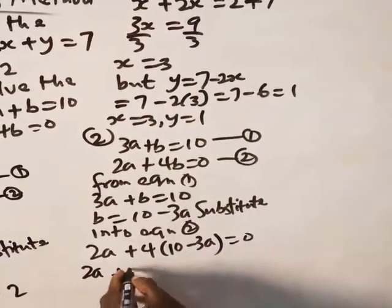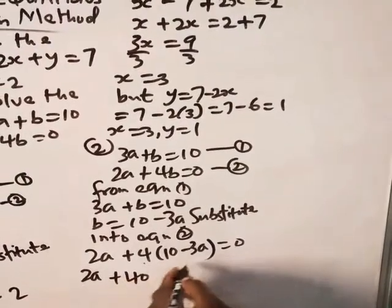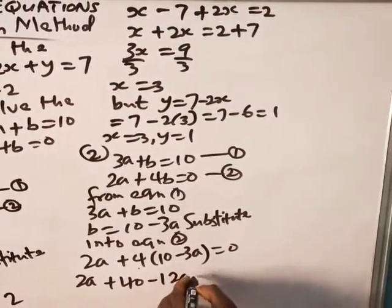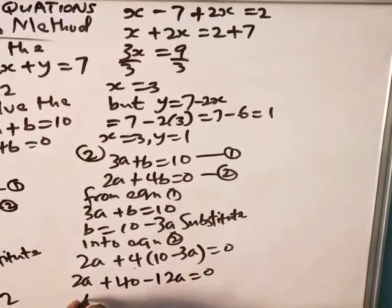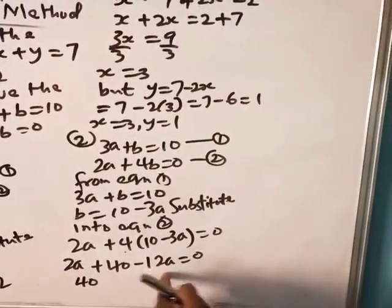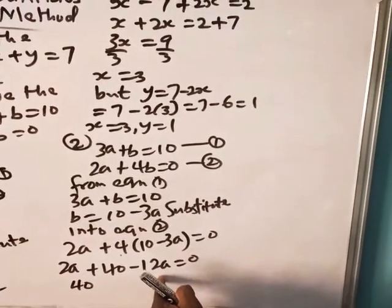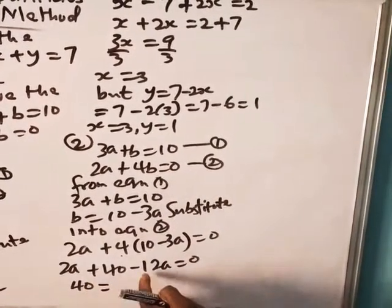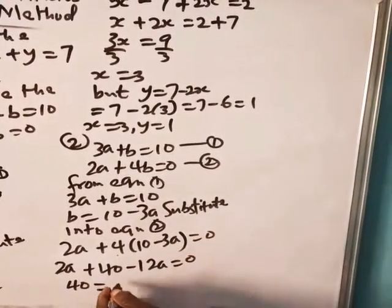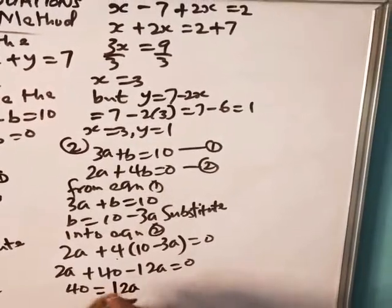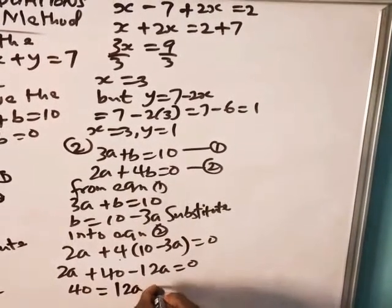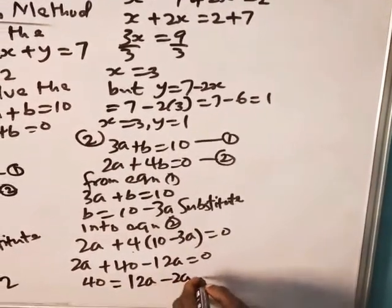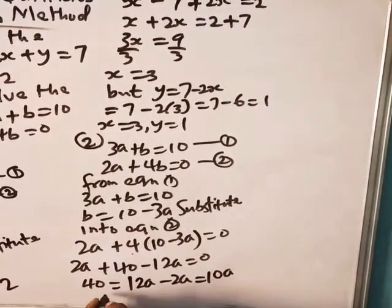So 2a plus 4 times 10, 40. 4 times minus 3a minus 12a is equal to 0. So leave 40 behind. Because 2a minus 12a will give me negative. So I wish to take them this way. So 40 is equal to... When you bring minus 12a here, you have it to become plus 12a. When you bring 2a here, it becomes minus 2a.